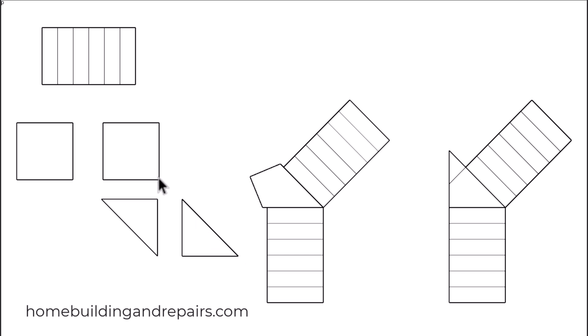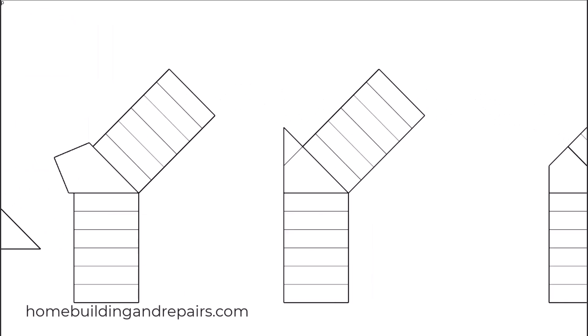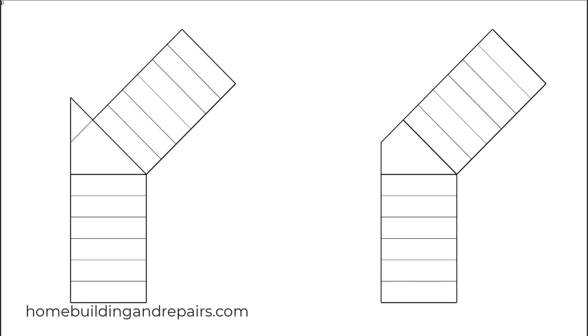To make a 45 degree angle, just draw a square box and then draw a line from this point to this point. And that's going to give us a shape like this. And then we can take this shape here and put it over here to get started with our stairway layout. And of course, there are plenty of other ways to create a 45 degree angle.